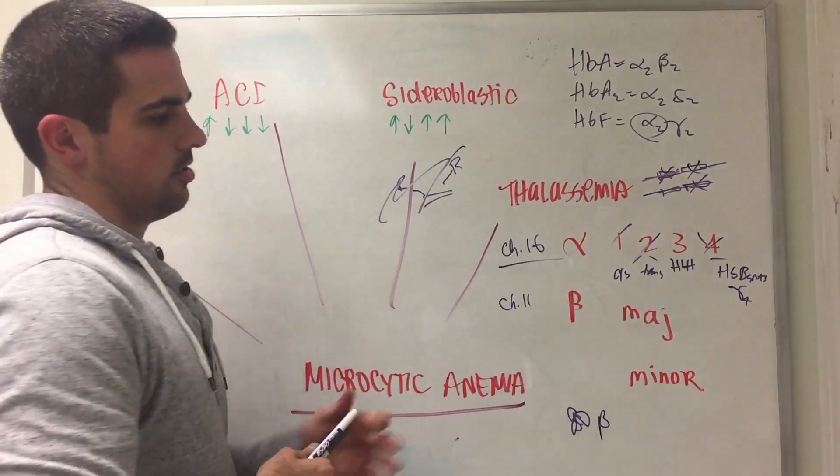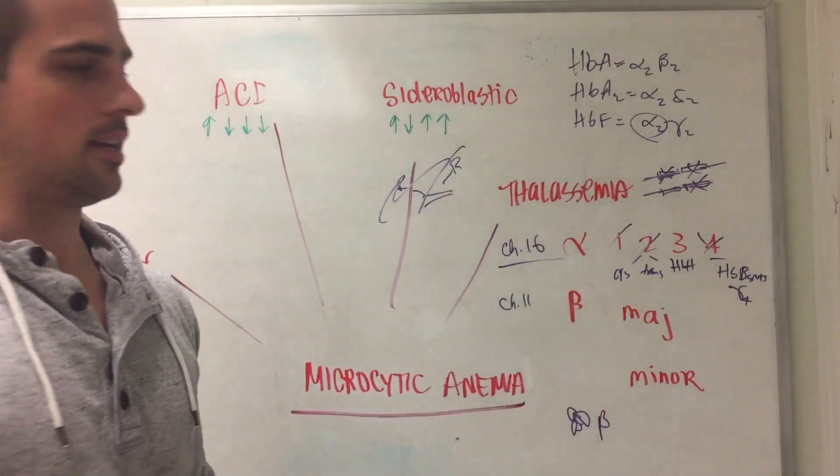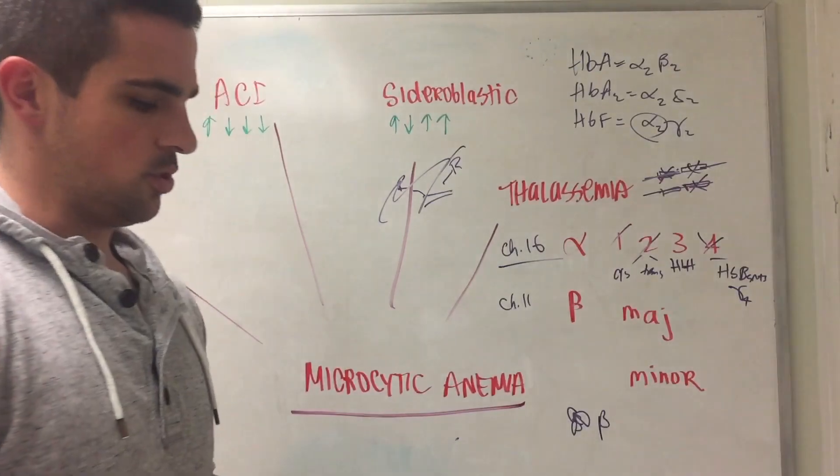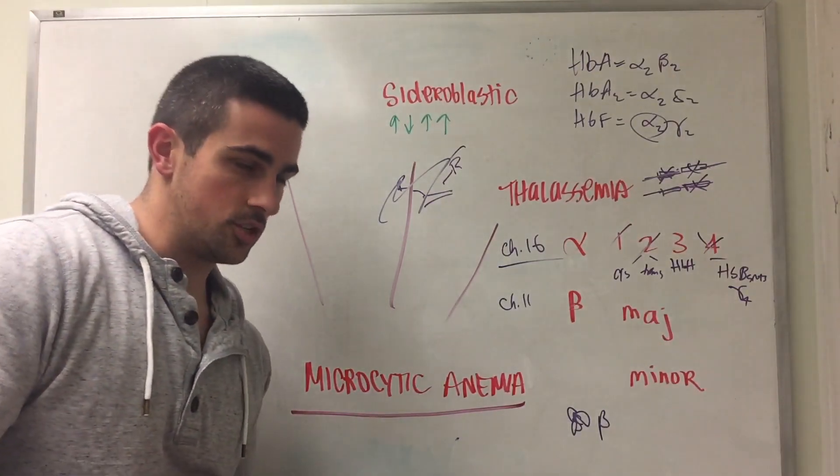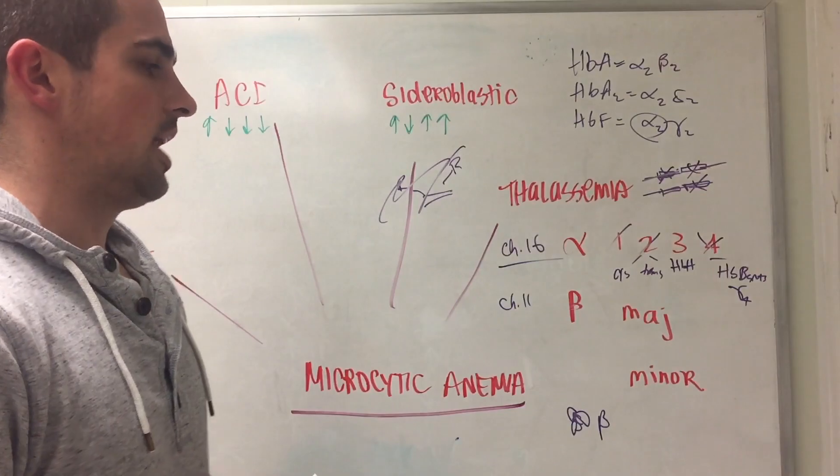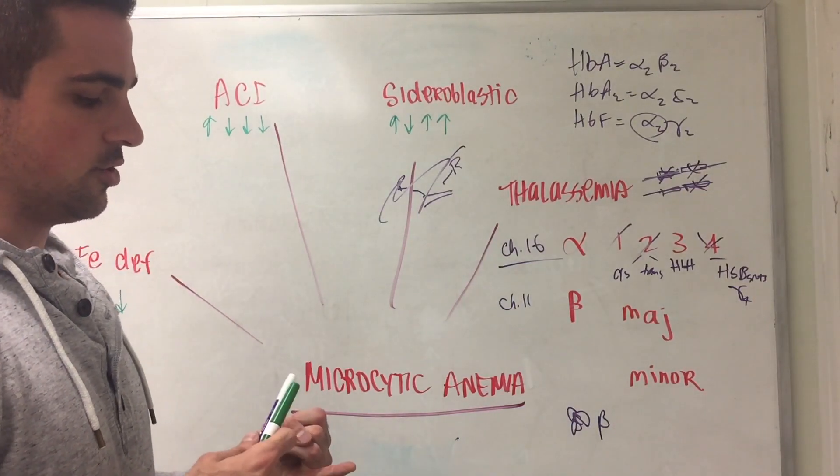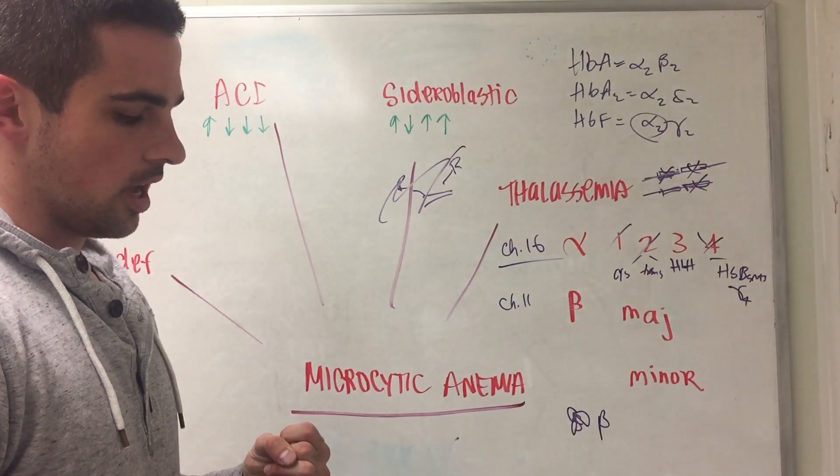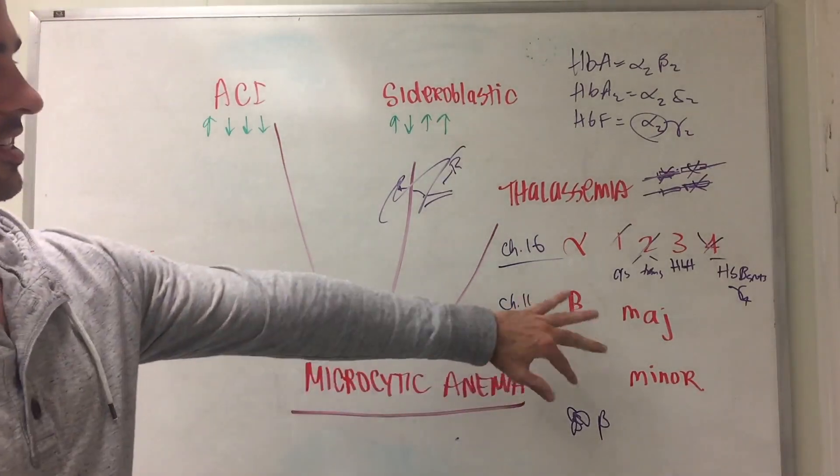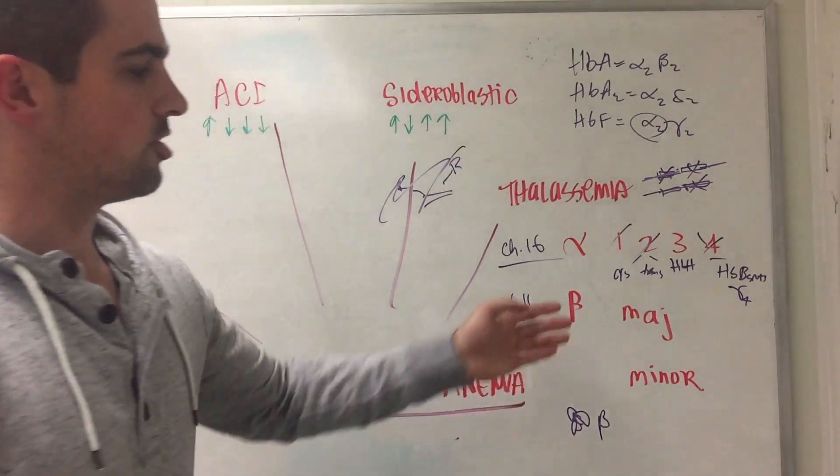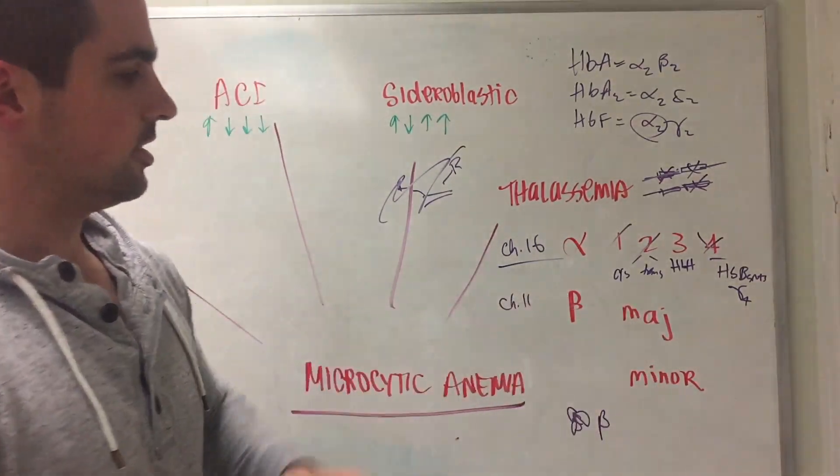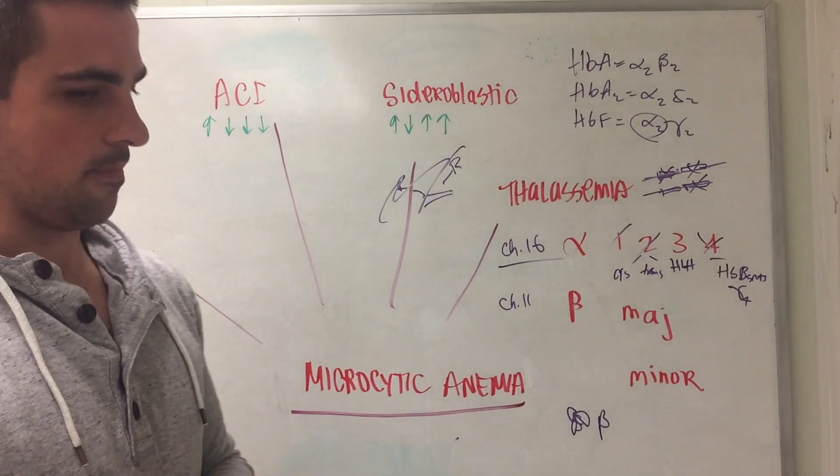For beta thalassemia you have major and minor. Minor is asymptomatic, major is not. You only have two alleles of beta, so that's where the issue comes in. You can have decreased functionality or you can have it missing, but usually it's decreased functionality. If there are two decreased functionalities on each of the alleles then you're going to have beta thalassemia major.